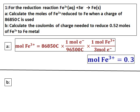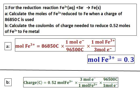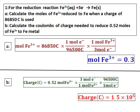Part B is similar to Part A, but in this case the moles are given and we are asked for coulombs. We are given 0.52 moles of Fe³⁺. Start by converting moles of Fe³⁺ to moles of electrons using the equation, then convert moles of electrons to charge using the relation that 1 mole of electrons equals 96500 coulombs. The charge comes out as 1.5 × 10⁵ coulombs.